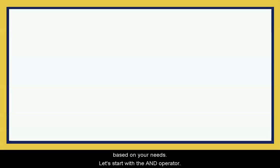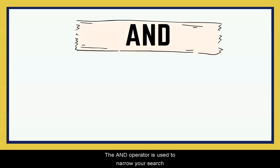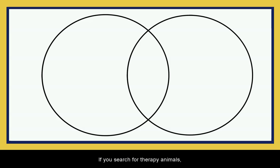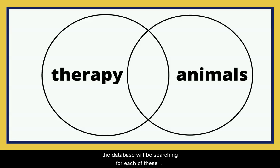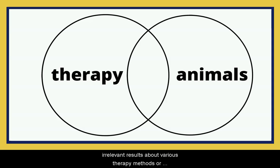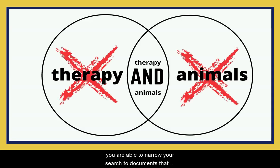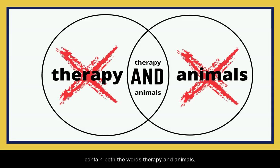Let's start with the AND operator. The AND operator is used to narrow your search and to link different keywords together. If you search for therapy animals, the database will be searching for each of these words separately, so you may be finding relevant results about various therapy methods or animals around the world. By adding AND between your two keywords, you are able to narrow your search to documents that contain both the words therapy AND animals.